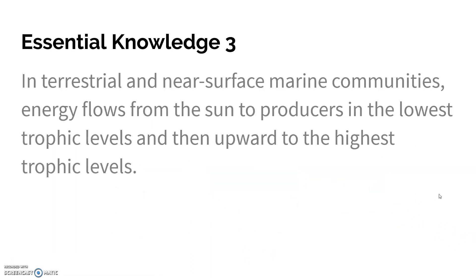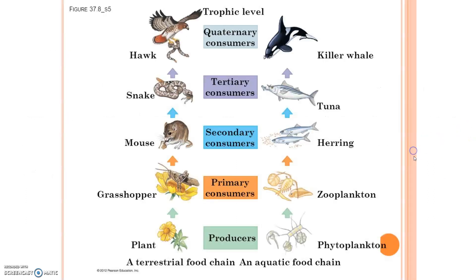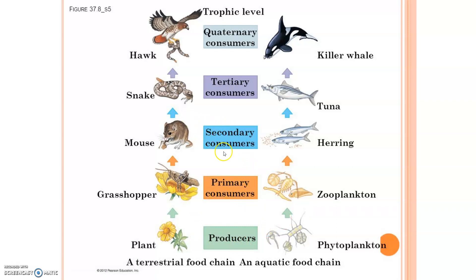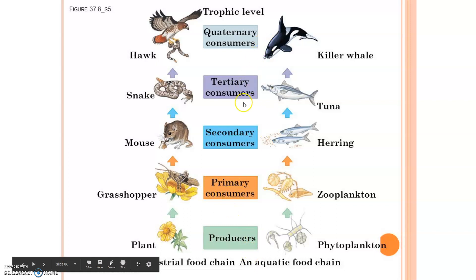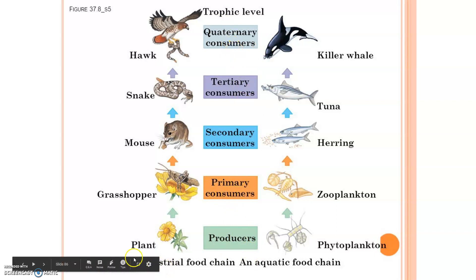In terrestrial and marine communities that are close to the surface, energy flows from the sun to the producers and then upward to the higher trophic levels. We start out with producers, then we have our herbivores, then maybe our omnivores — that's our secondary consumers, because they're the ones that eat the primary consumers — and then tertiary consumers, and then quaternary consumers. This shows a terrestrial food chain, and this one shows an aquatic food chain.